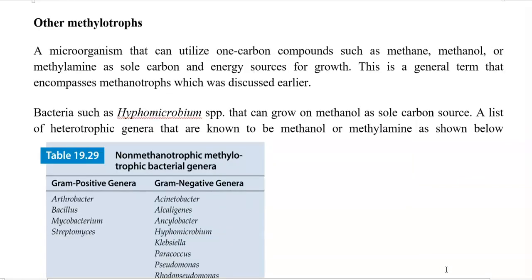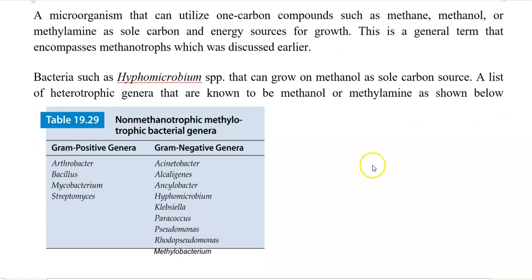Further, we look at other methylotrophic organisms. Any microorganism that can utilize one carbon compounds such as methane, methanol, or methylamine as a sole carbon and energy source is referred to as a methylotroph. This term also includes methanotrophs. Other bacteria regarded as methylotrophs include Hypomicrobium, which can grow on methanol as a sole carbon source, and a list of heterotrophic bacteria including gram-positive bacteria such as Streptomyces, commonly present on leaf surfaces and in soil.